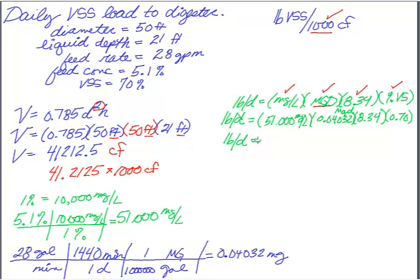So 51,000 times my 0.04032 times 8.34 times 0.7, and I end up with 12,000, and I'm going to call it 12,005 and just round at this point, because those little partial pounds aren't going to make much of a difference. So 12,005 pounds.